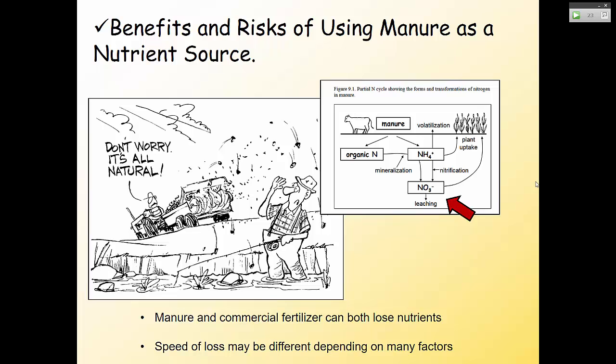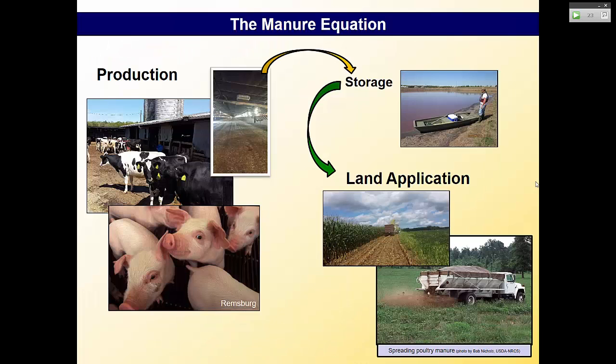If someone tells you they're applying manure and thinks commercial fertilizers are all evil, the nitrogen produced from manure can leach out of the soil just as easily as commercial fertilizer. It might be slow-release, but it can still be lost. You still have to manage it. The speed of the loss is the key difference — commercial fertilizer can be immediately available for uptake.